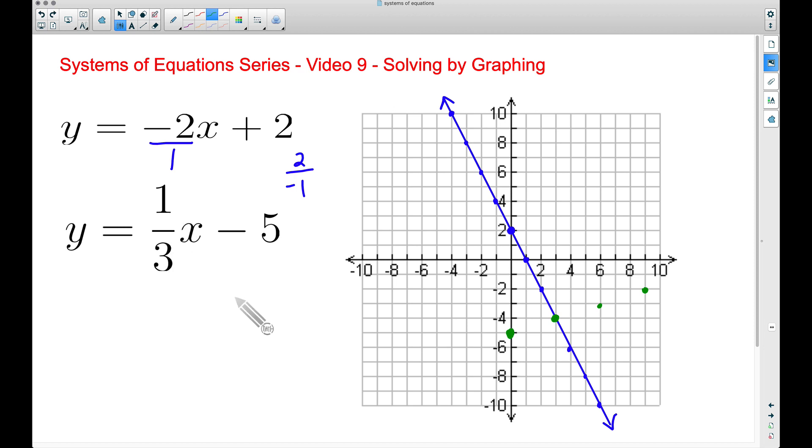And just to reiterate this fact as well, positive 1 over positive 3 is the same thing as negative 1 over negative 3. Which means we can go down 1 and left 3. Check it out. Down 1, left 3, down 1, left 3, and you can continue this process on.